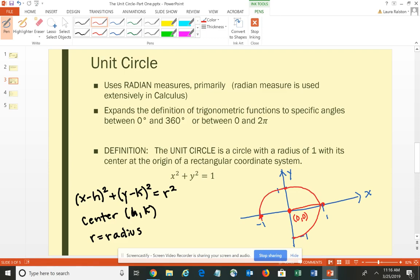So if you plug that in, how do we end up with x² + y² = 1? Because you would have (x - 0)² + (y - 0)² = 1². And we don't typically write the zeros in there, so we would have x² + y² = 1. So there is the formula for the unit circle and how it is derived.